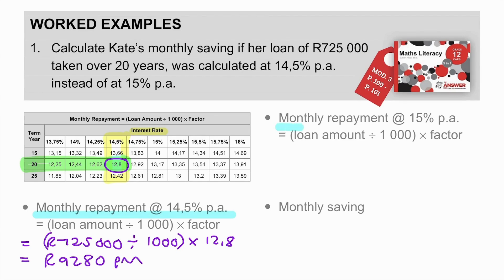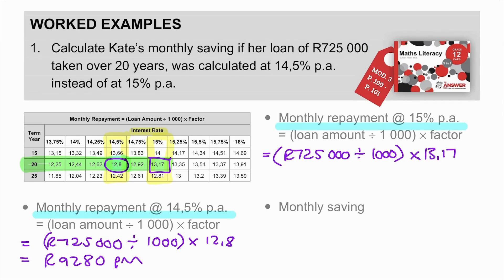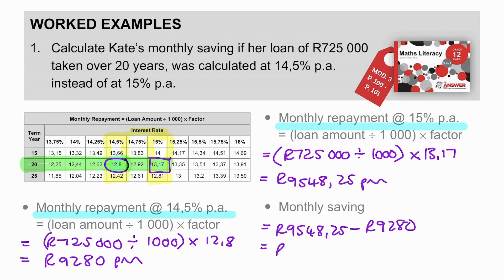Now at the higher rate of 15% per annum, with 20 years still remaining, the factor from the table is 13.17. So: R725,000 divided by 1,000 times 13.17 gives a monthly repayment of R9,548.25. You can see the higher repayment from the higher interest rate. Therefore, her monthly saving is the difference between the two — R9,548.25 minus R9,280 — giving a monthly saving of R268.25 per month.